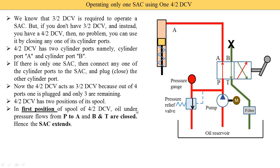B and T are closed. Here you see the B port is closed. Suppose this B port were connected to another cylinder — oil from that cylinder would enter port B and go from B to T to the return. But here port B is blocked, so no oil enters the B port, meaning no oil reaches the T port either. That is why B and T are closed.